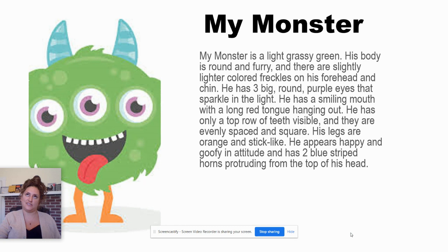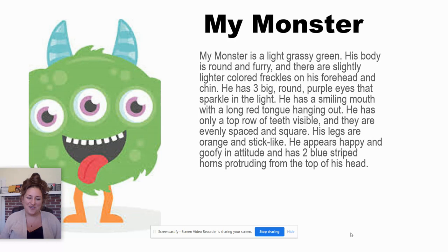How about trying a better description? My monster is a light grassy green. His body is round and furry and there are slightly lighter colored freckles on his forehead and chin. He has three big round purple eyes that sparkle in the light and he has a smiling mouth with a long red tongue hanging out. He has only a top row of teeth visible and they're evenly spaced and square. His legs are orange and stick-like and he appears happy and goofy in attitude and has two blue striped horns protruding from the top of his head.